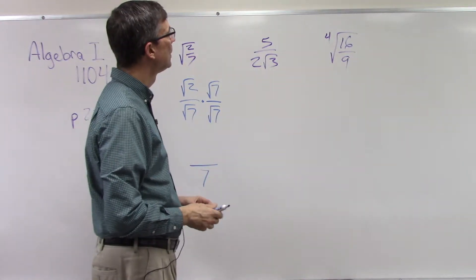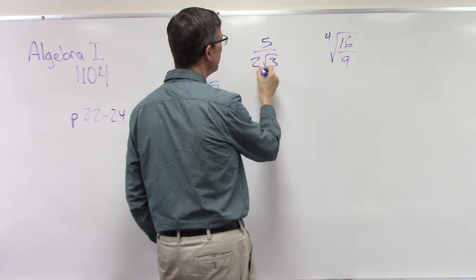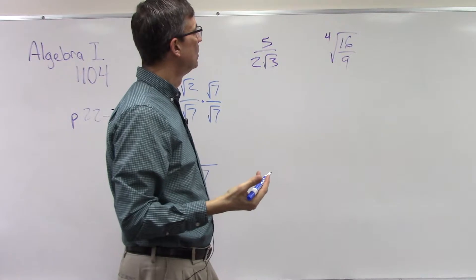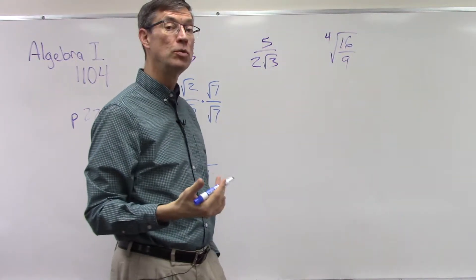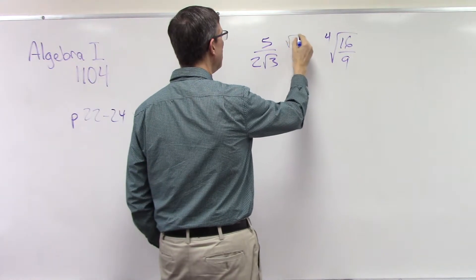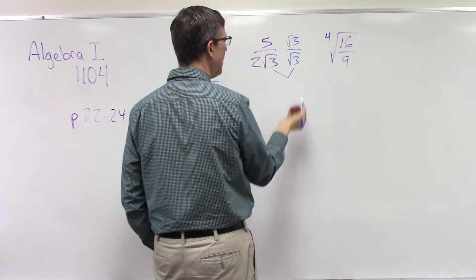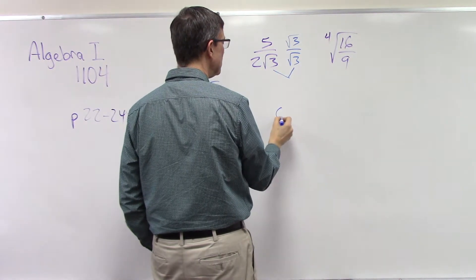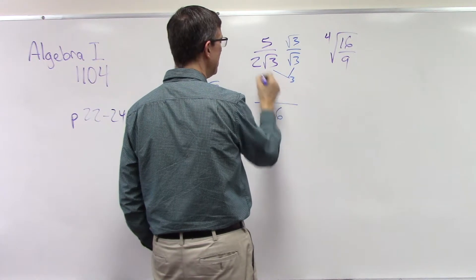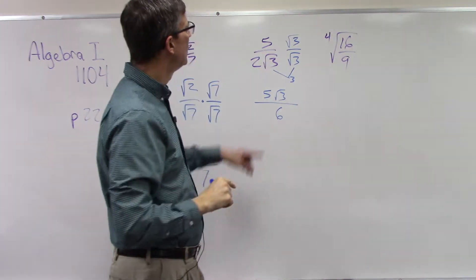Now let's look at this one: we have 5 over 2 square root of 3. The radical part is the square root of 3, so we multiply top and bottom by the square root of 3. The square root of 3 will pop out, and you'll get a 6 in the denominator because 3 times 2 is 6. Now we can leave 5 square root of 3 on the top.